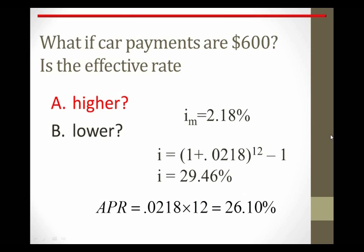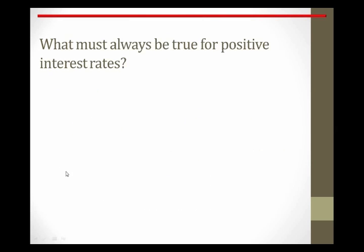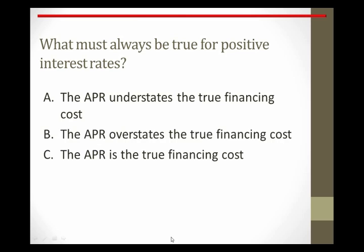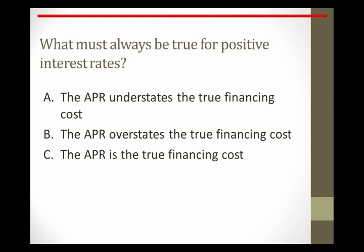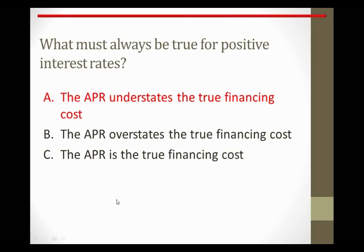Notice that the higher the level of interest rates, the bigger the gap between the APR and the effective annual rate. For positive interest rates, which of the following must be true: does the APR understate financing costs, overstate them, or is it identical to the true financing costs? The APR was always less than the effective annual rate, so the answer is A — the APR understates the true cost of financing.